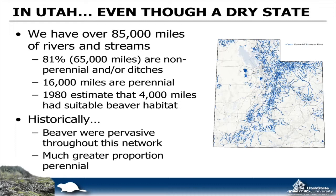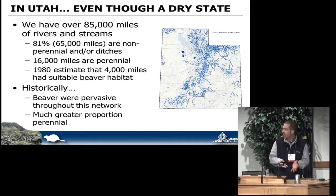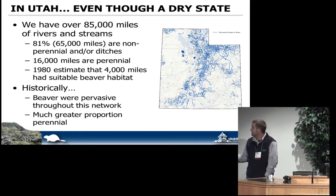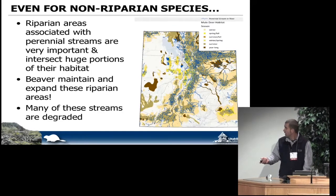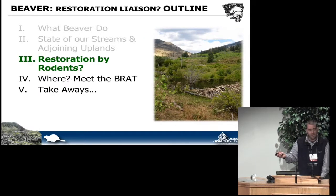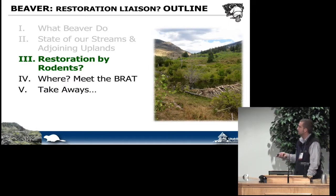One thing we should think about is why people even came to Utah in the first place - they came here to trap beaver. Beaver would have been much more pervasive throughout this drainage network. Given the impact they have on the hydrology of these systems, that perennial drainage network would have been more extensive too, and the vegetation communities that dip down into those riparian areas would have been different as well. There's a lot of work now looking at how we use beaver as a restoration agent.